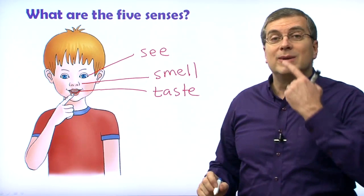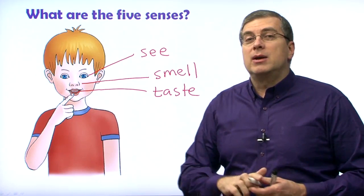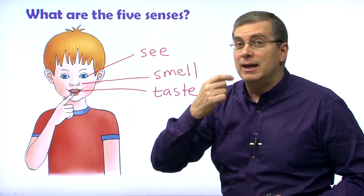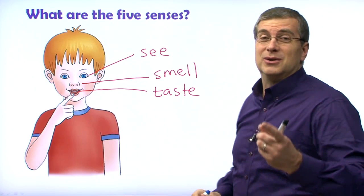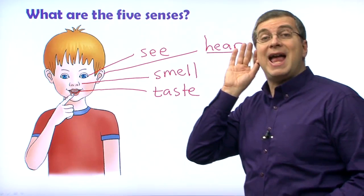So we have three. How about number four? Still on the head — we have eyes, nose, tongue, and these big things on the side of your head. Those are ears. What do we use ears for? We use ears to hear. We can hear when our mother's saying 'hey, come here.' We use our ears to hear things. So we have see, smell, taste, hear.